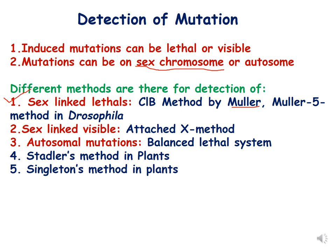Sex-linked visible mutations can be detected by the attached-X method, but that is not in your course. Autosomal mutations can be detected by the balanced lethal system, Stadler's method in plants, and singleton methods in plants. We will be focusing on the CLB method by Mueller in this lecture.